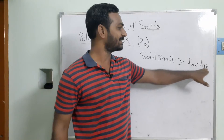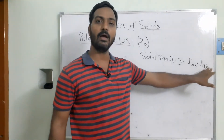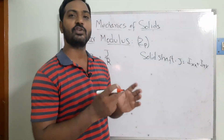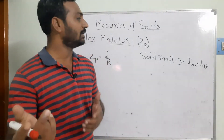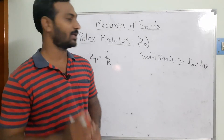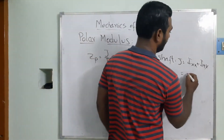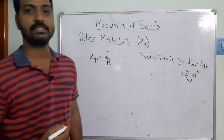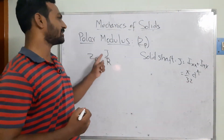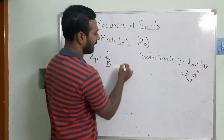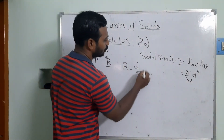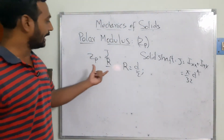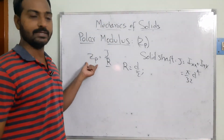The polar moment of inertia works out to π/32 × D⁴, using the symmetry of I_xx and I_yy, each equal to π/64 × D⁴. Substituting R = D/2 and J into the polar modulus formula, we can then find the polar modulus for the solid shaft.